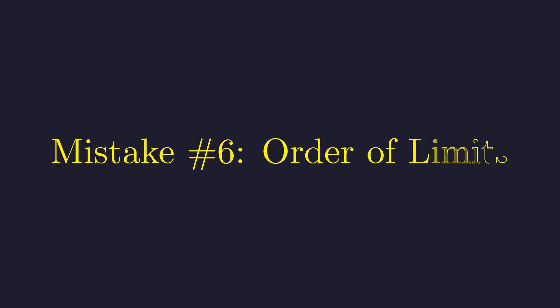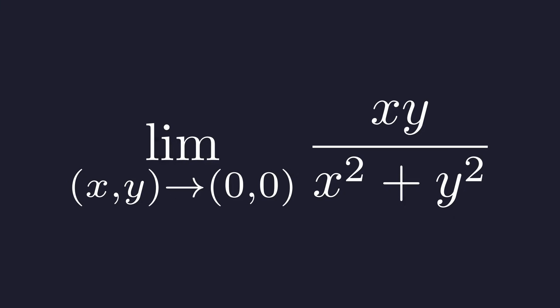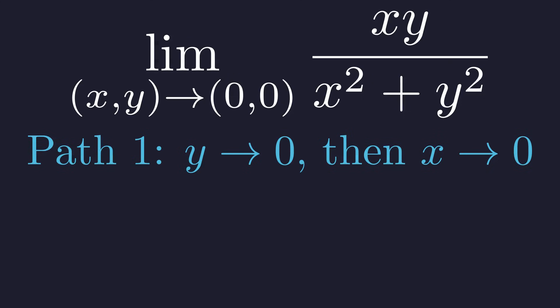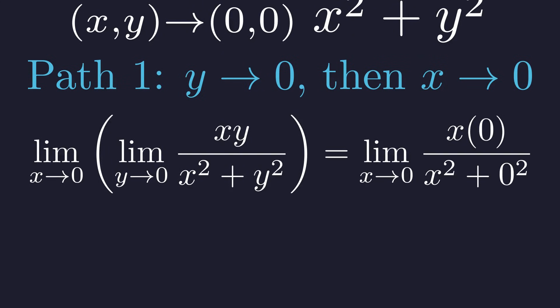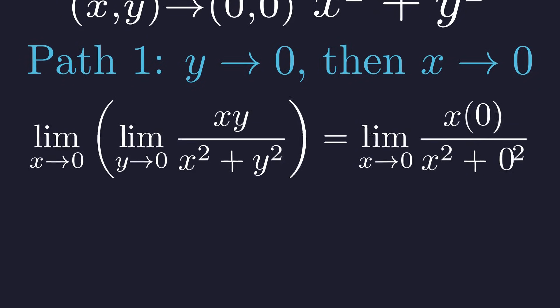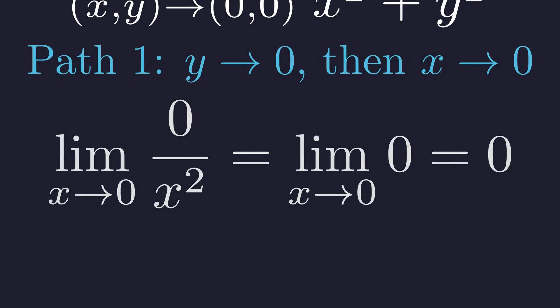In multivariable calculus, the path you take matters. Does the order in which you take a limit change the answer? Let's investigate the limit of xy over x squared plus y squared as x and y approach zero. First let's approach the origin along the x-axis, letting y go to zero first, then x. First we evaluate the inner limit by setting y to zero. This simplifies to the limit of zero, which is zero.